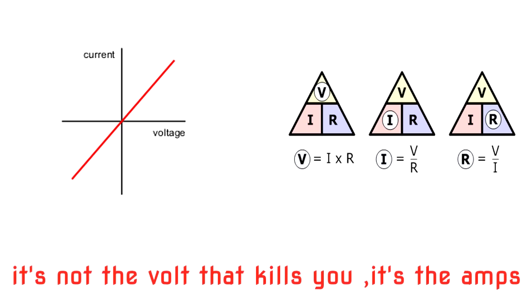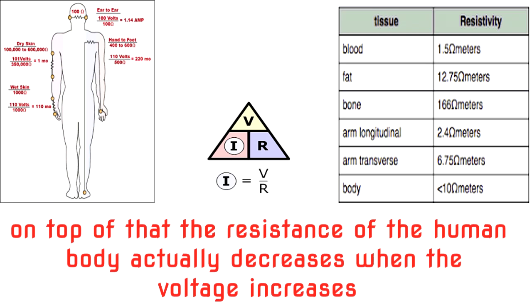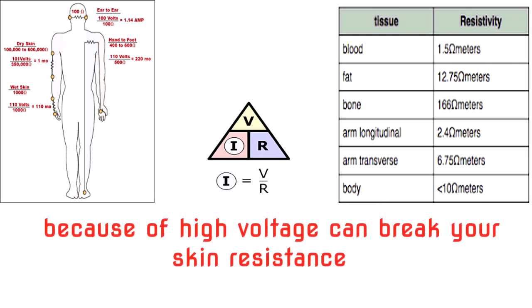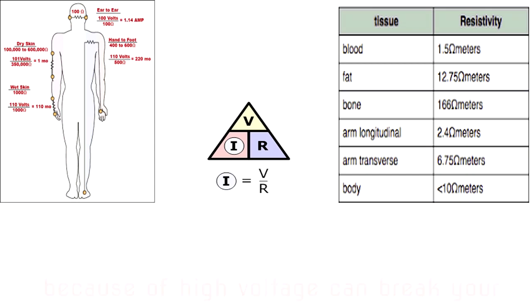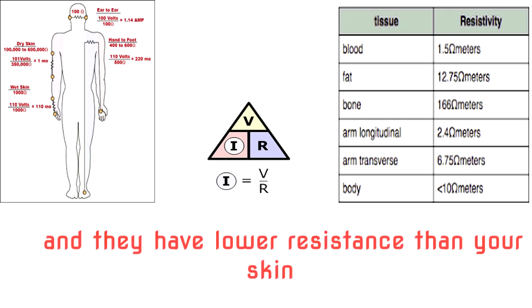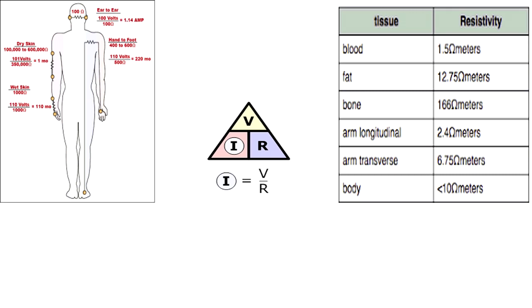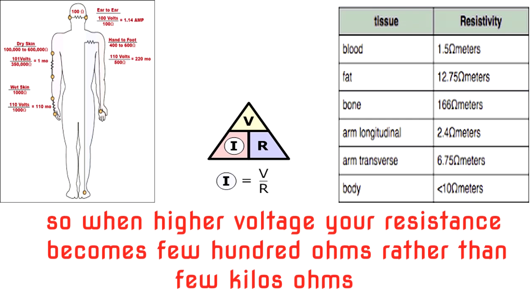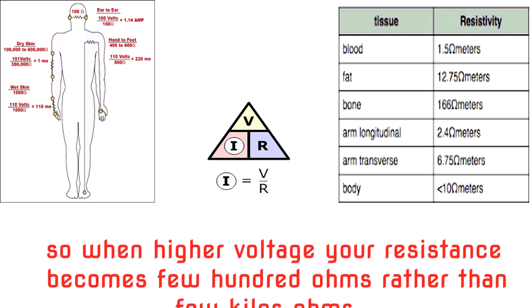On top of that, the resistance of the human body actually decreases when the voltage increases, because high voltage can break your skin resistance. Under that skin there is blood and veins, and they have lower resistance than your skin. So in higher voltage, your resistance becomes a few hundred ohms rather than a few kilohms.